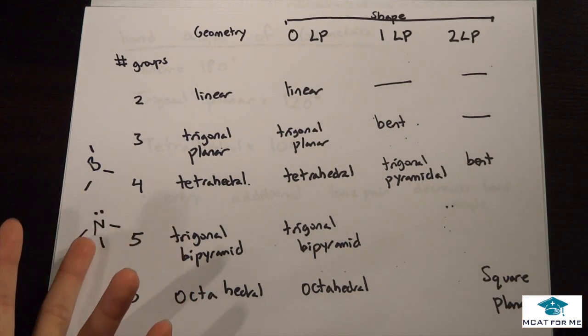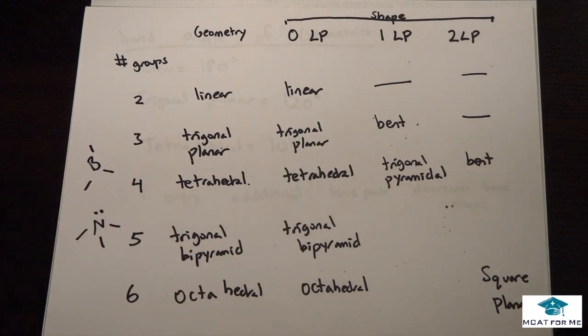Pyramidal is actually what they normally refer to it as. So four groups around it - one, two, three, four - and then one lone pair will make it have a shape of trigonal pyramidal but still a geometry of tetrahedral.